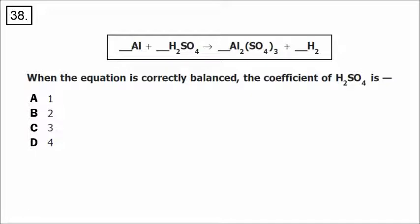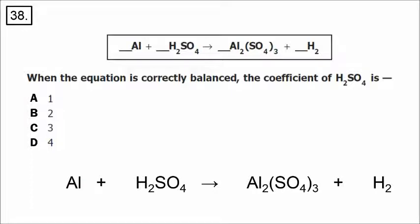Number 38 is a single replacement reaction — element plus compound producing a new element and a compound. Our job is to balance the equation. Starting with Al (aluminum), put a 2 on the left to balance aluminum. The SO4 on the right has parentheses with a 3, multiplying by 3. To get 3 SO4s on the left, use a coefficient to balance SO4. Now we have 3 times 2, giving 6 hydrogens on the left, so put a 3 on the right. The equation is balanced. The coefficient for H2SO4 is 3.